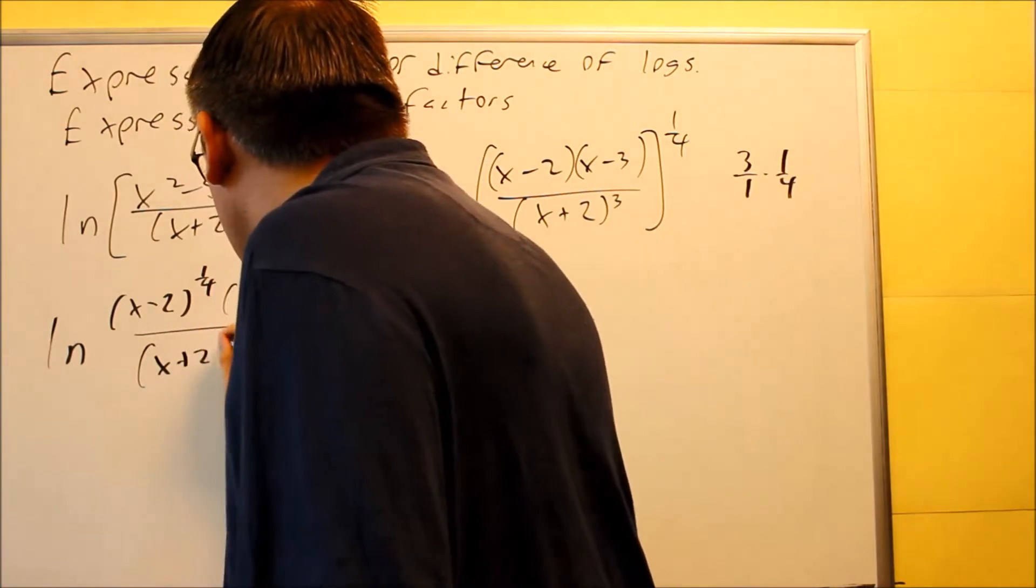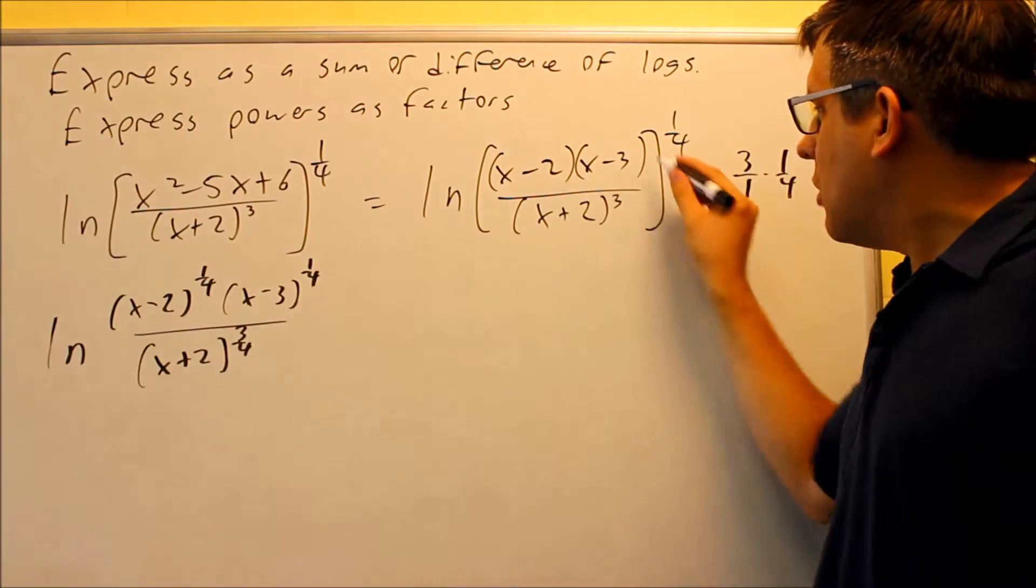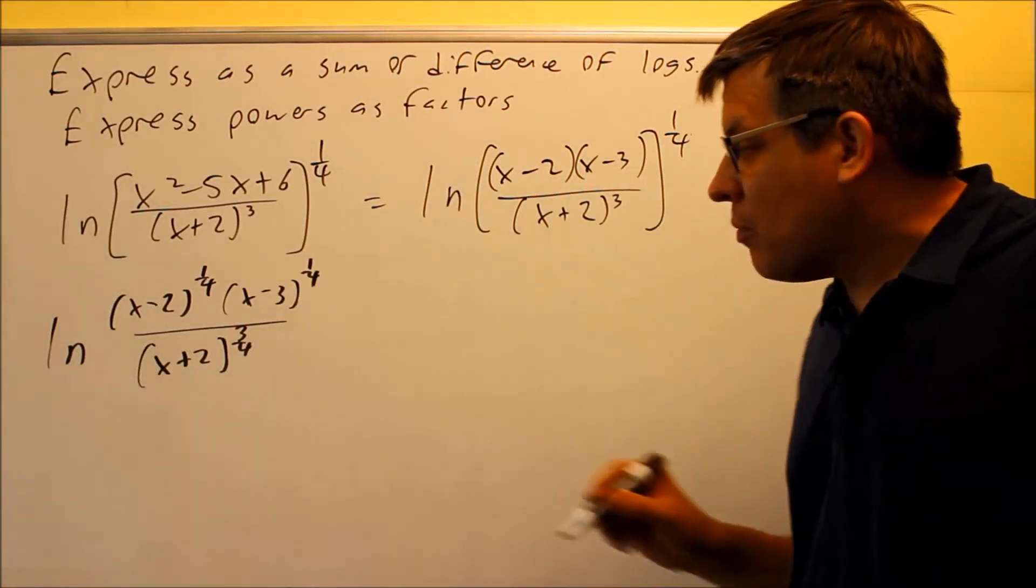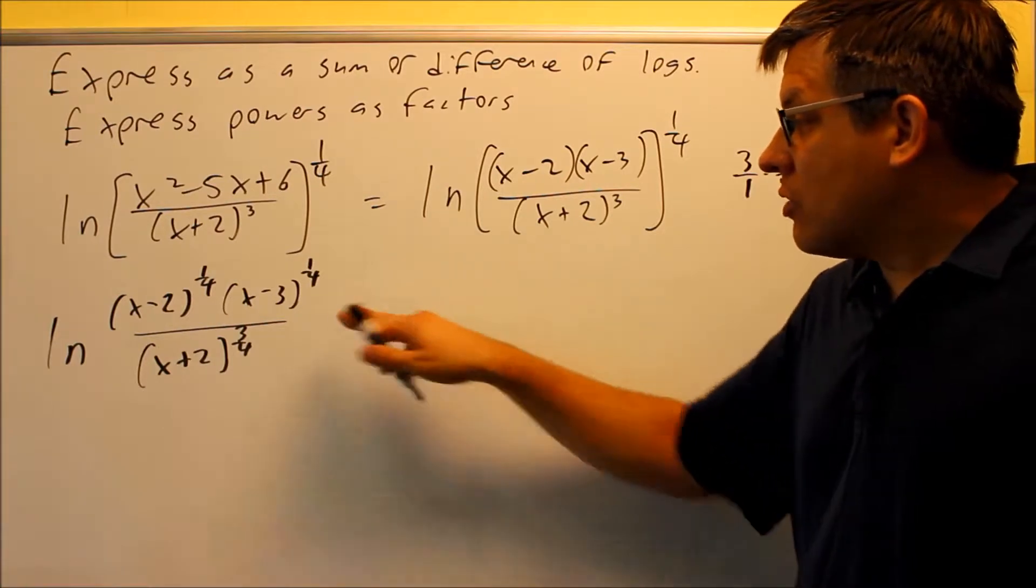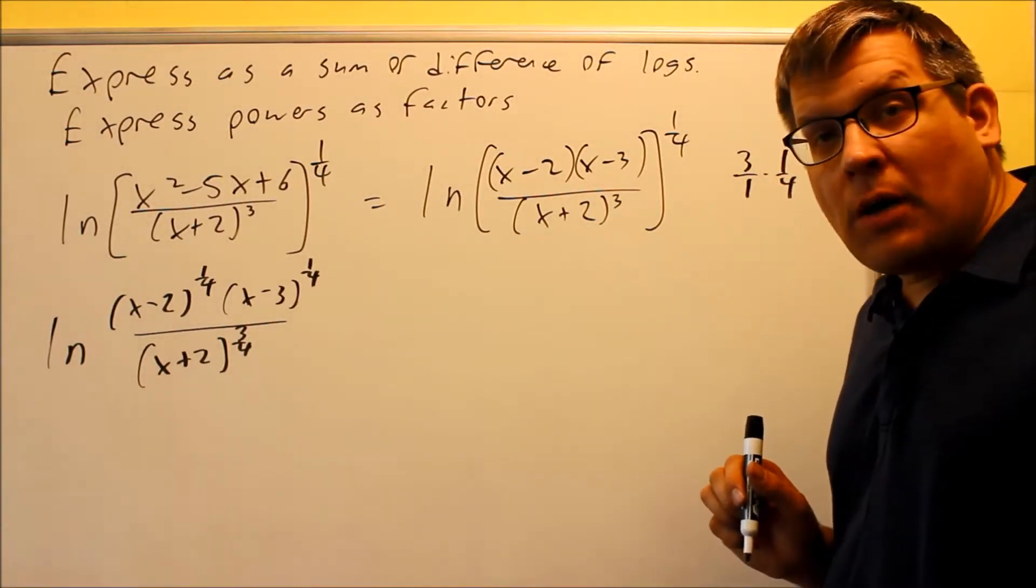x plus two, three-fourths. So now I have that on the bottom. I don't need the brackets anymore because I've already distributed the one-fourth for top and bottom. Now that I have everything all distributed, I'm ready to break it apart by using log properties.